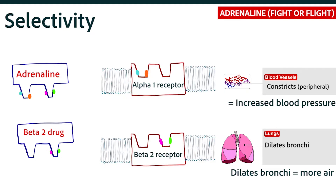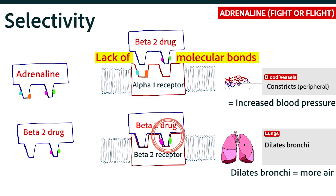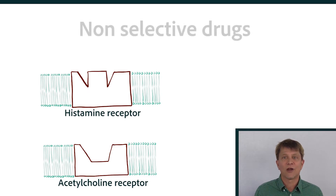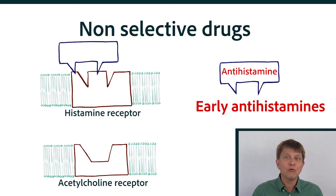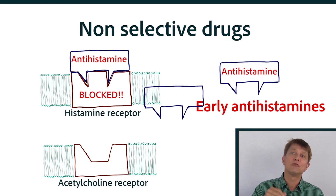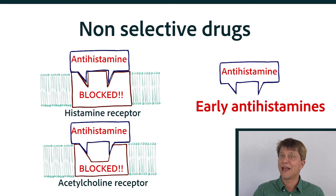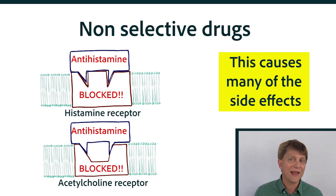This can be represented in diagrams where the beta-2 medication has strong binding to the beta-2 receptor but very weak binding to other adrenergic receptors. We also have drugs that bind to a seemingly unrelated receptor. For example, early antihistamines bound to and blocked the histamine-1 receptor as intended, but they also bound to and blocked the acetylcholine receptor, causing many side effects. This is why our medications aim to become more and more selective over time.